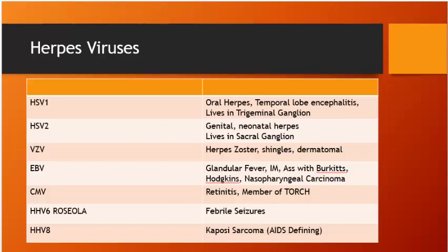Herpes simplex 1: oral herpes; lives in trigeminal ganglia. Herpes simplex 2: genital/neonatal herpes; lives in sacral ganglia. HSV causes temporal lobe encephalitis — haemorrhagic CSF on LP. Varicella zoster (HHV-3): shingles with dermatomal distribution. Epstein-Barr virus causes glandular fever (infectious mononucleosis) and is associated with Hodgkin's lymphoma, Burkitt's lymphoma, and nasopharyngeal carcinoma.